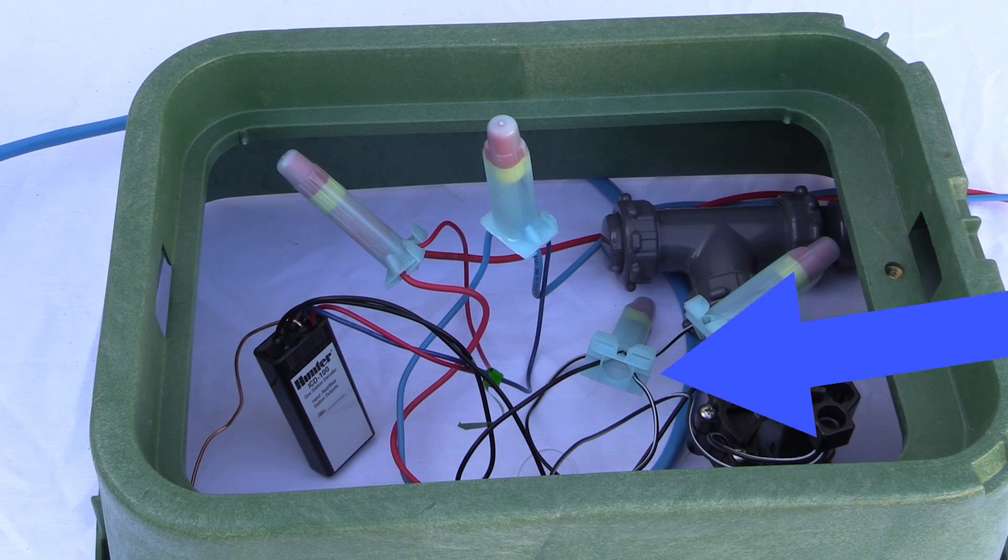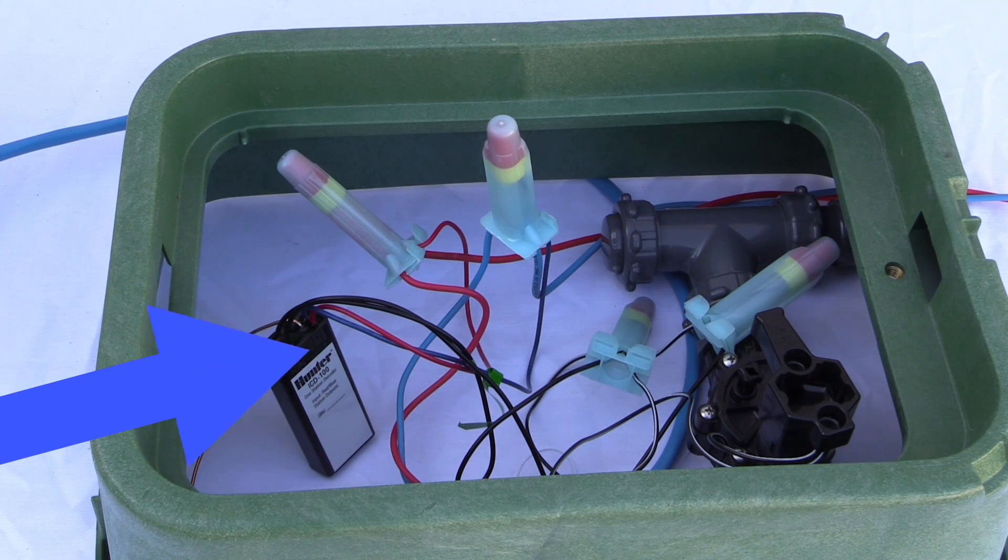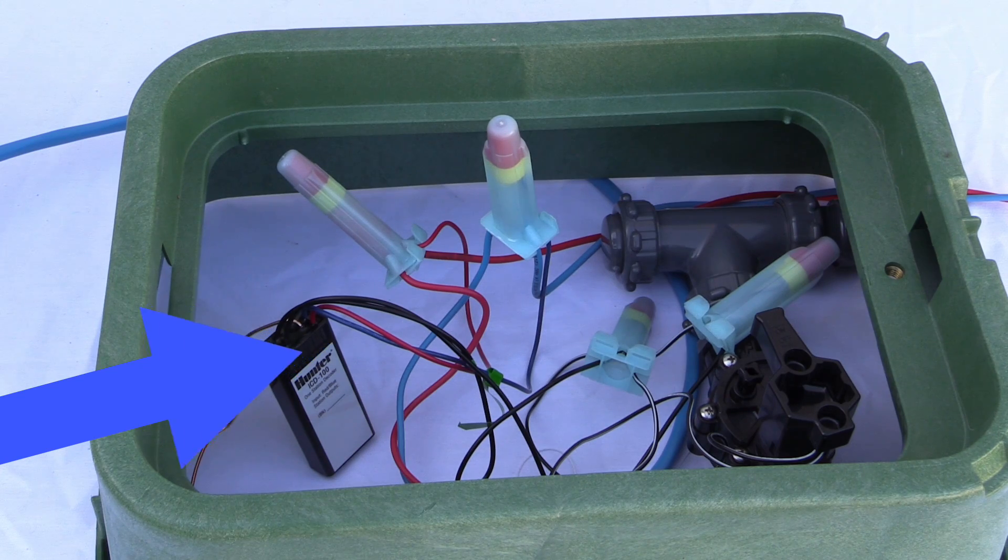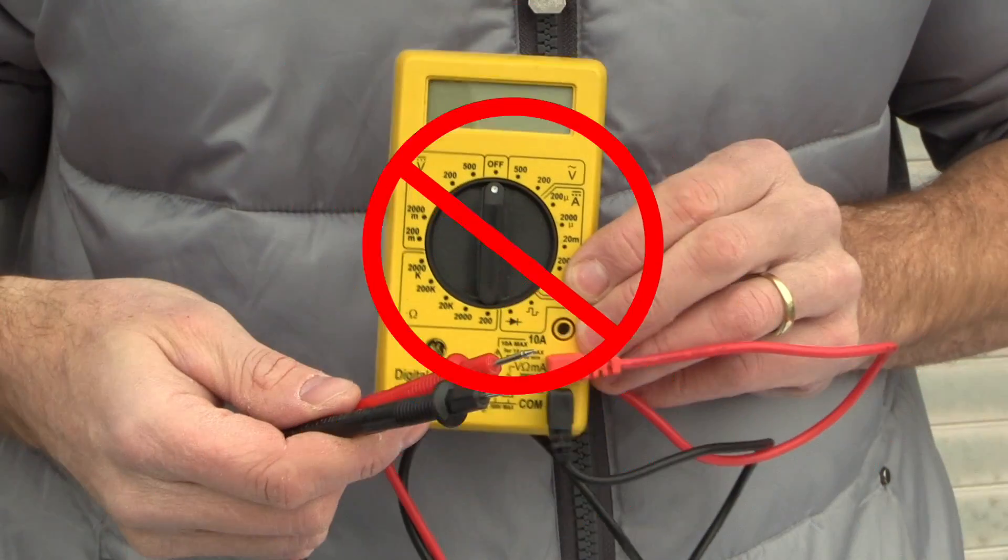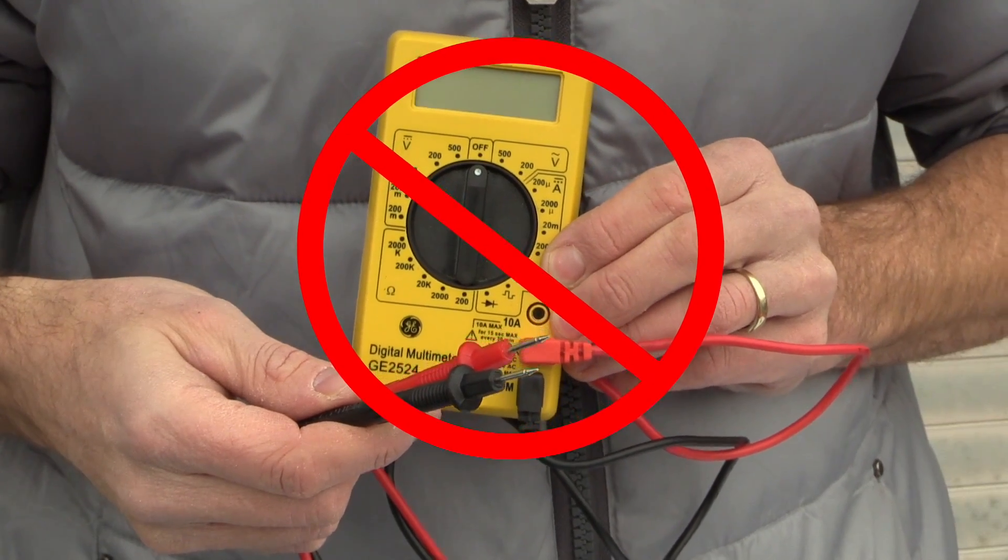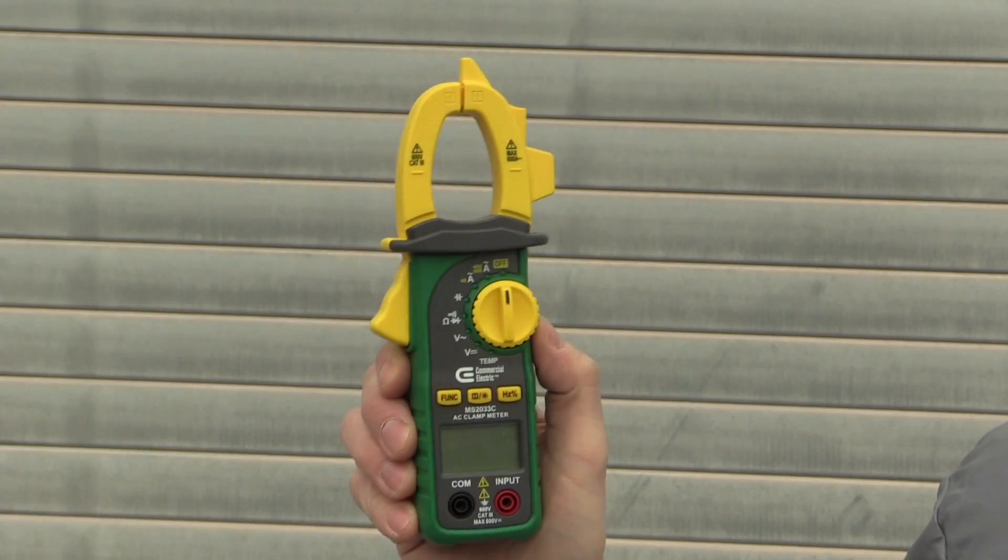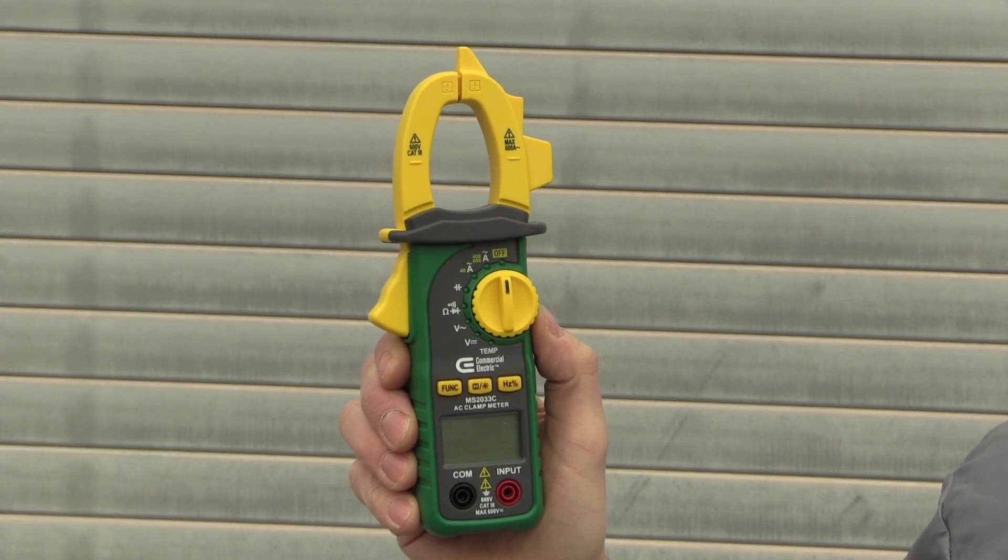Because valve solenoids are after the decoder, it's not possible to use traditional resistance measurements with an ohmmeter to measure the health of the circuits. Instead, we will demonstrate use of a clamp meter to measure current flow.